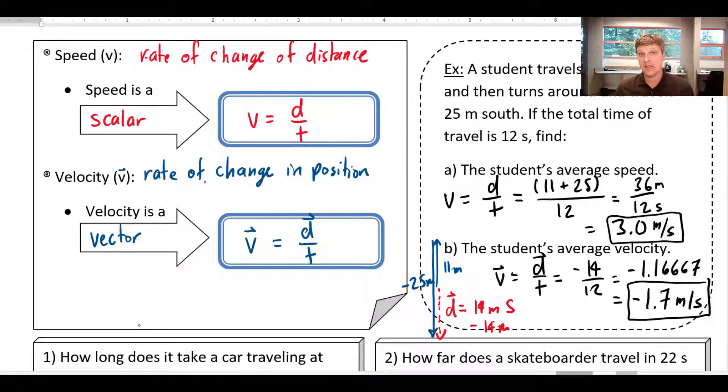Now, I could write that answer as 1.7 meters per second south. That would be the exact same thing. I'm going to kind of stick to the negative signs, though.